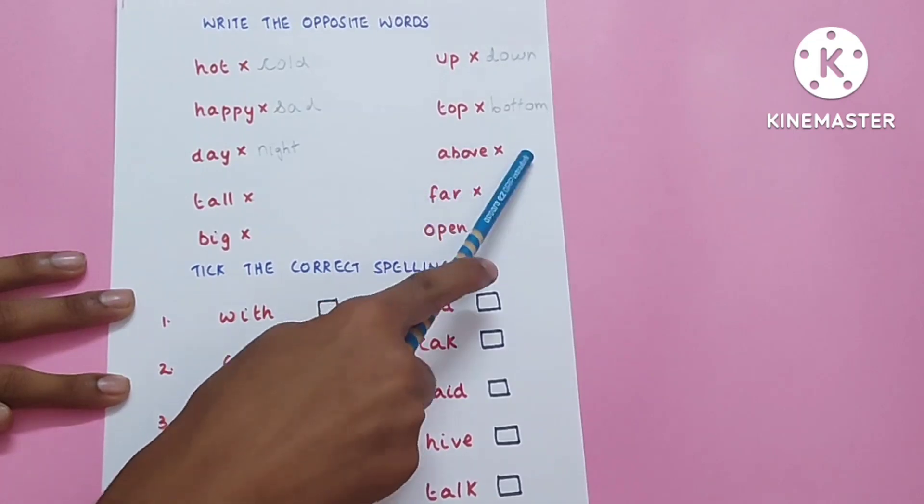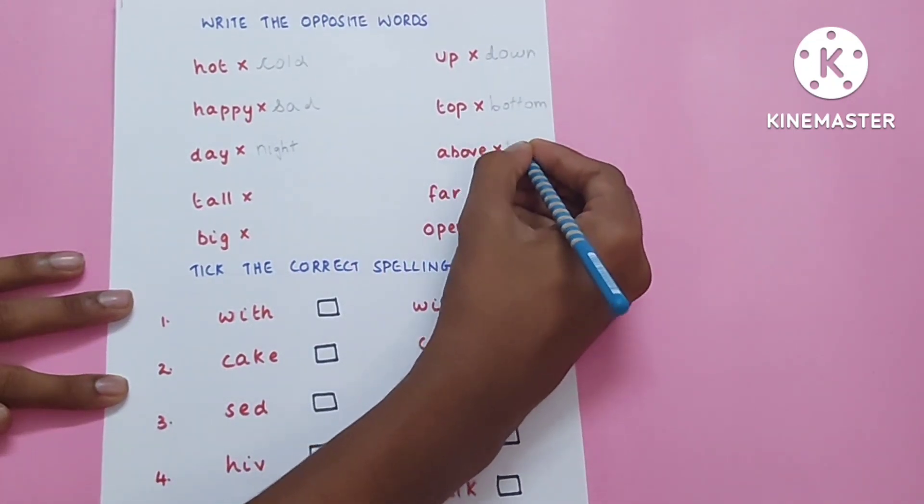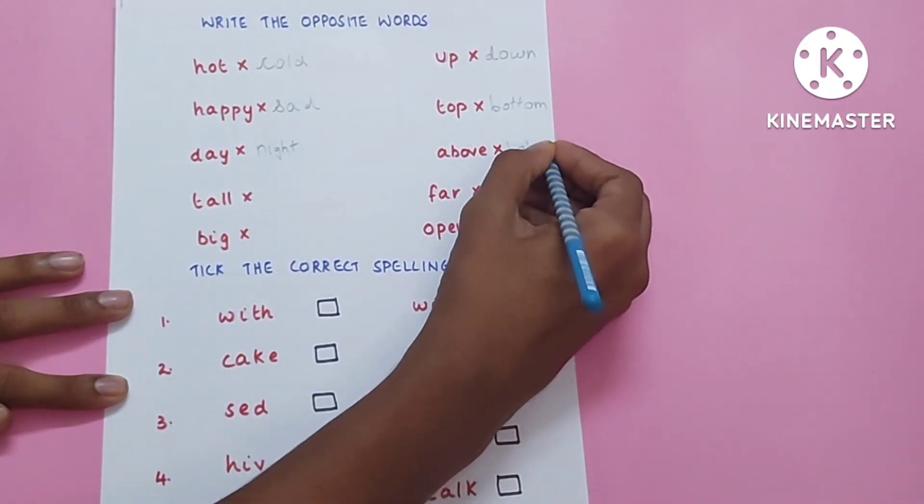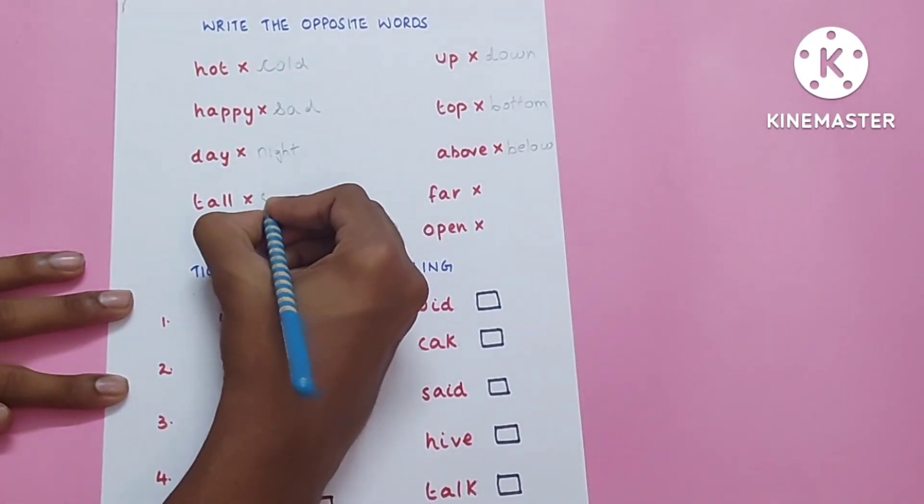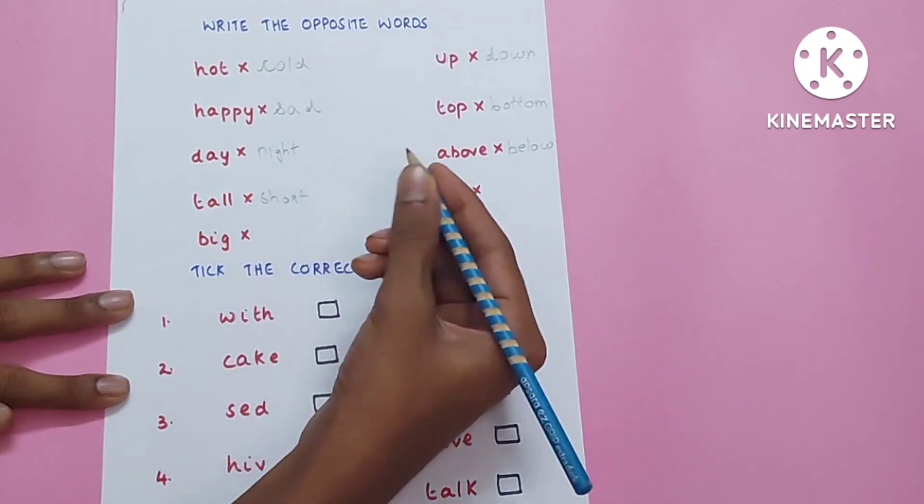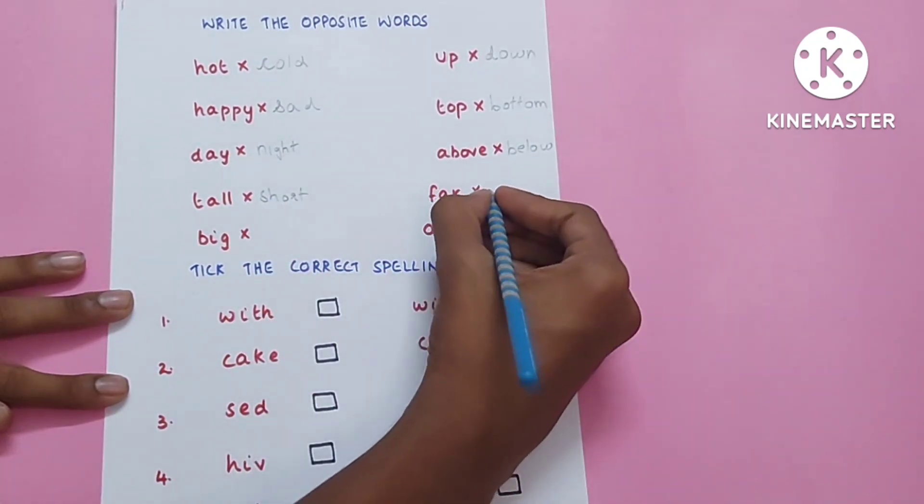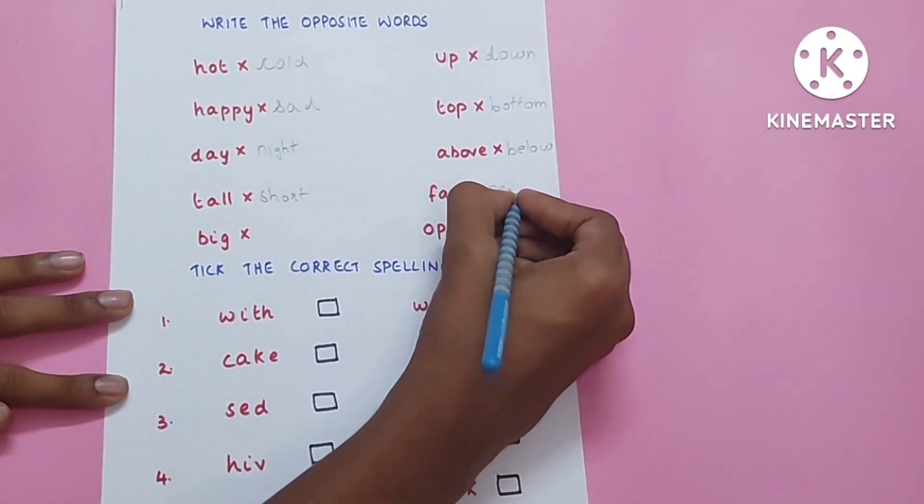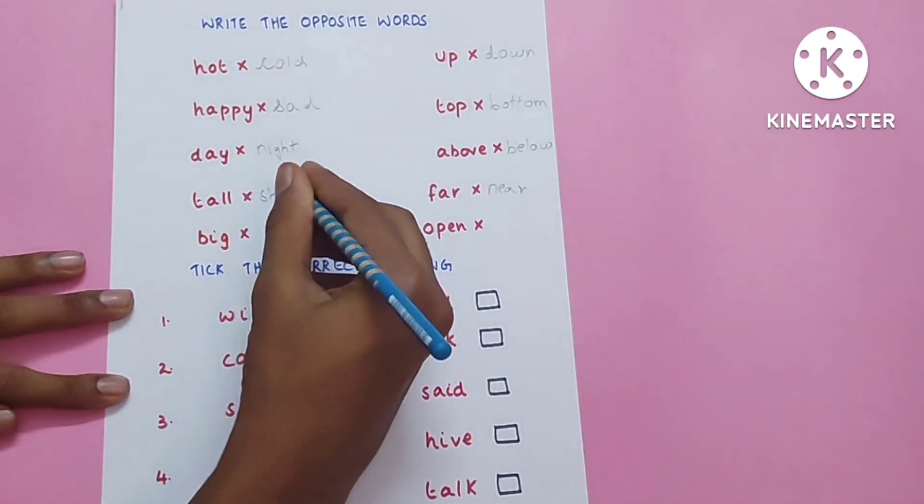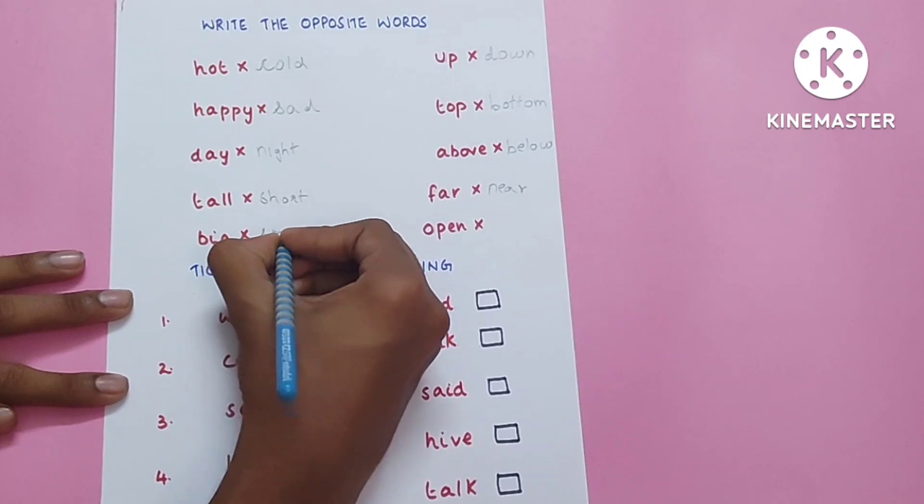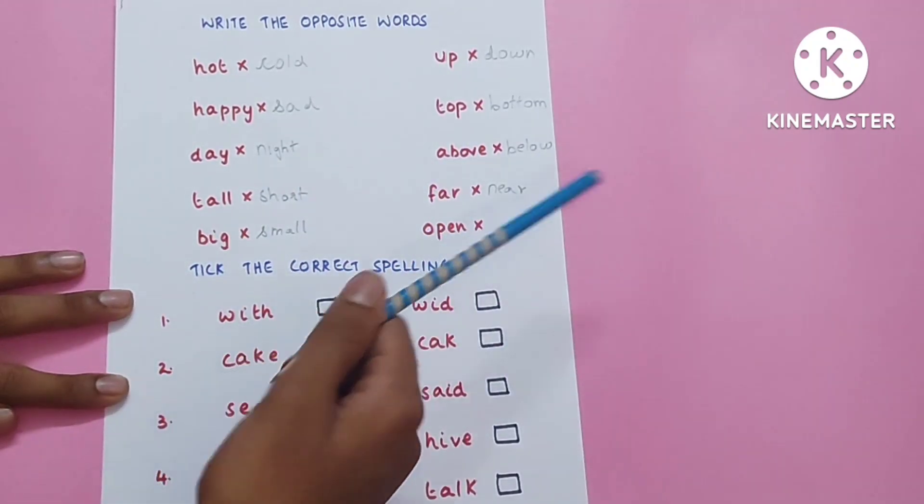Above, below. Tall, short. Far, near. Big, small. Open, close.